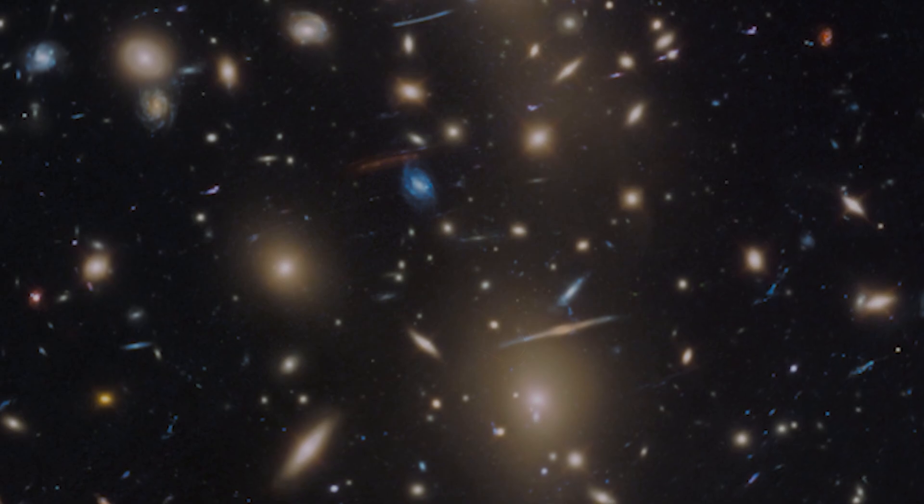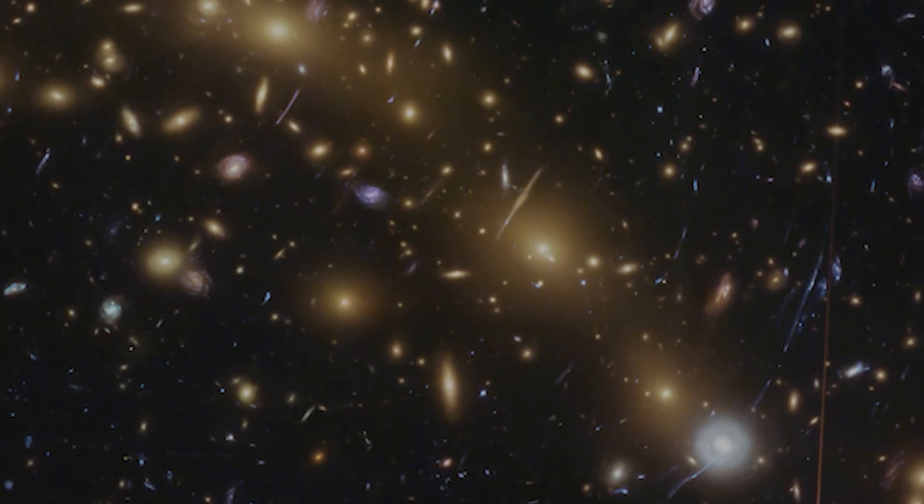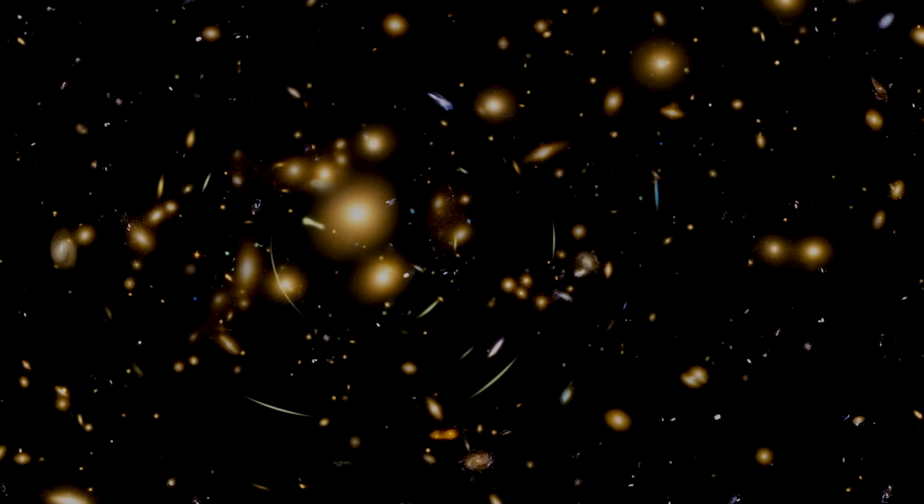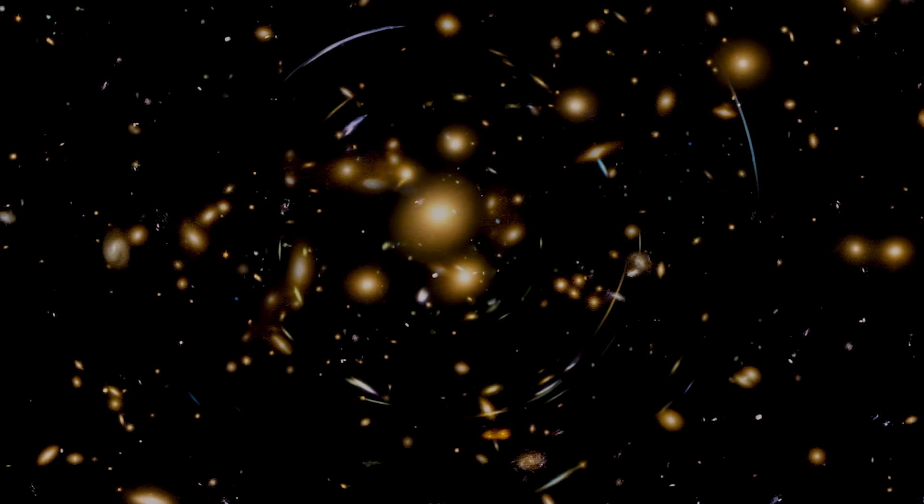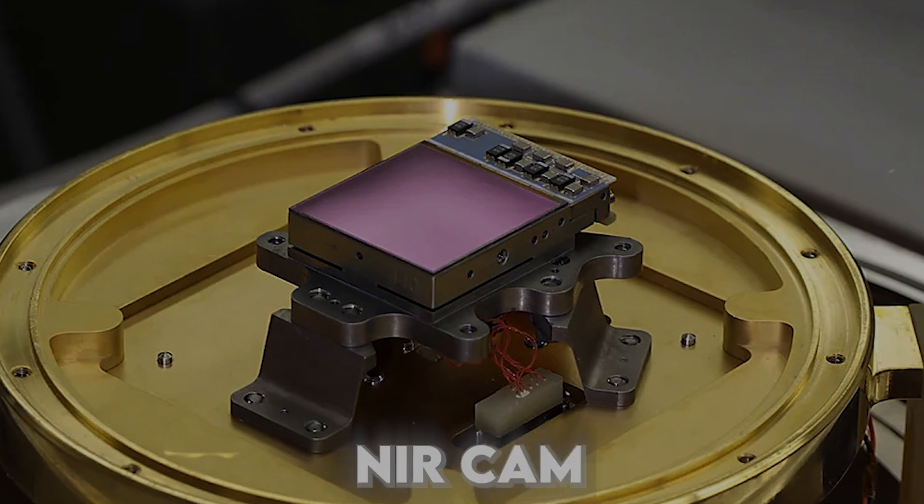When the telescope focused on this area, it uncovered new details that had never been visible before, even with the mighty Hubble Space Telescope. This stunning picture was pieced together from four different images taken by Webb's Near Infrared Camera, or NIRCAM.